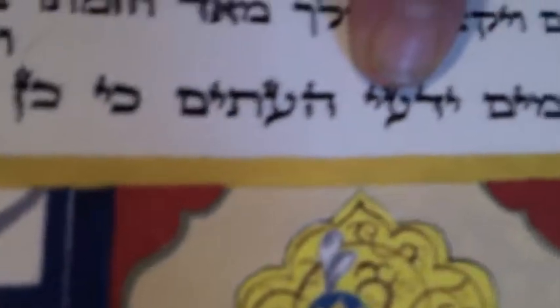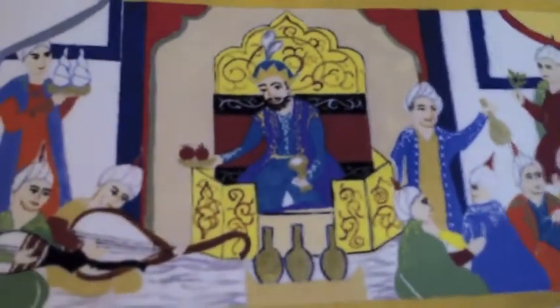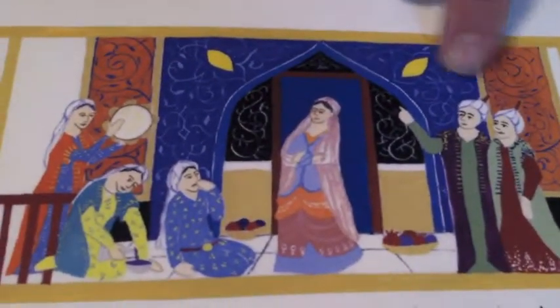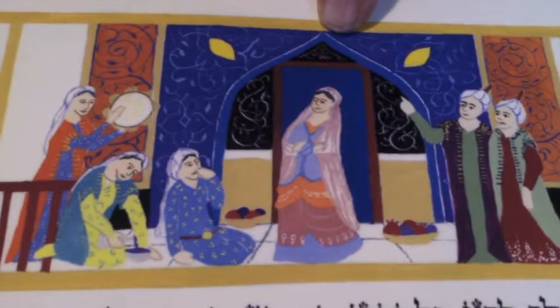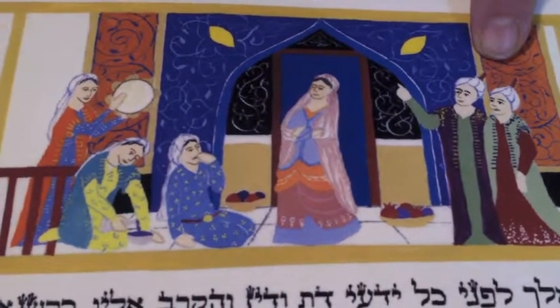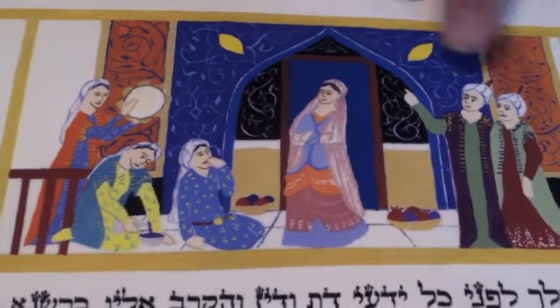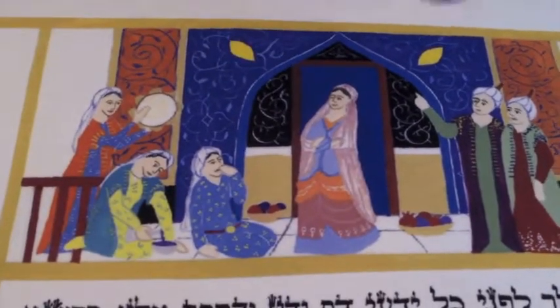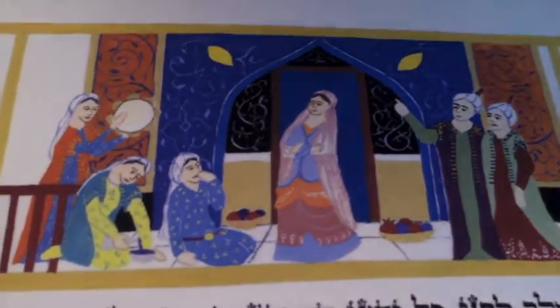Here we see Achashverosh feasting with the nobles in his court. Here Queen Vashti turns her back on the attendants when they come and ask her to dance for King Achashverosh and his guests. And here she is at her party with her maidens, but she turns her back on the attendants.